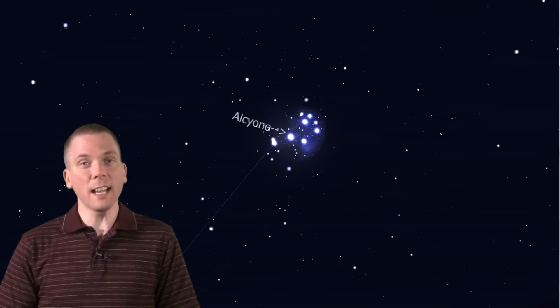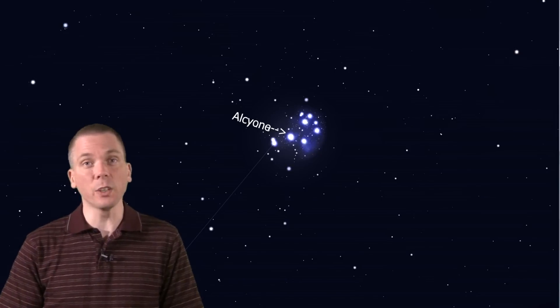Some newcomers to astronomy mistake the Pleiades for the Little Dipper. But if we think of it as a small dipper shape, then Alcyone is the star where the handle meets the bowl. With a telescope, look at the little trail of stars that taper off in brightness from 7th to 9th magnitude.